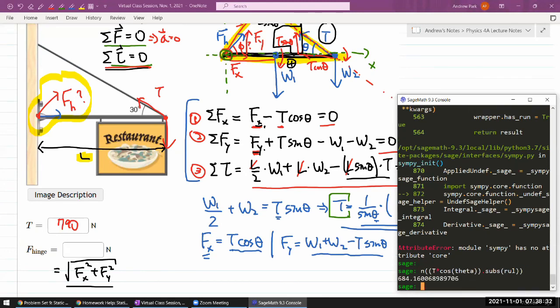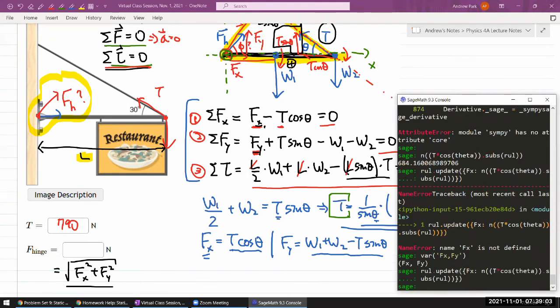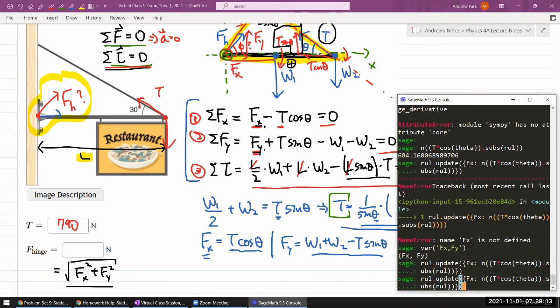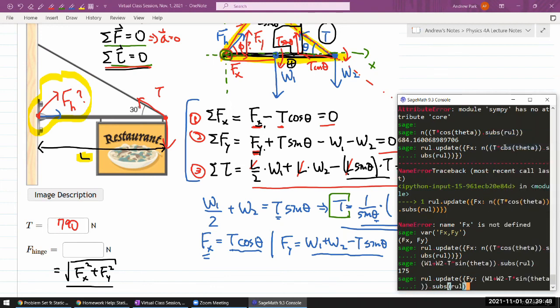Let me calculate the Y component. That's going to be W1 plus W2 minus T sine theta. Let me make sure I enclose everything and substitute the rule. That's my Y component, so let me update my rule. The way I'm doing this, it's not the most efficient way. I definitely could have done it in a way that's much quicker.